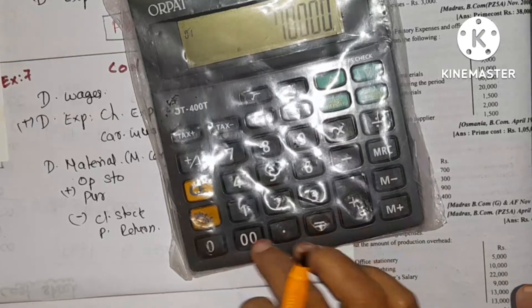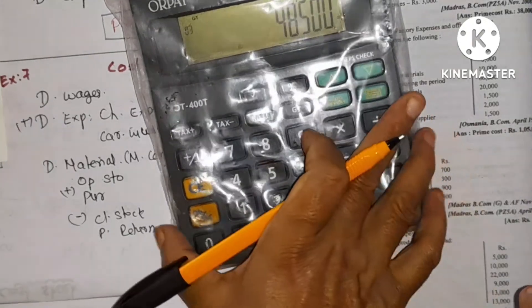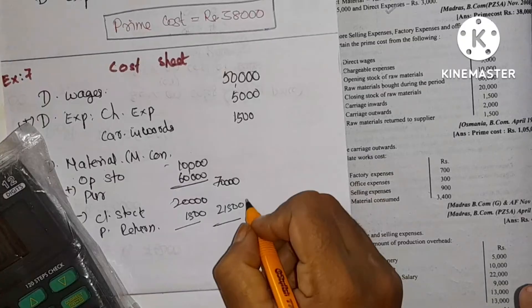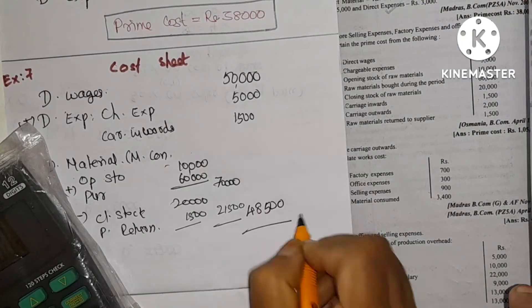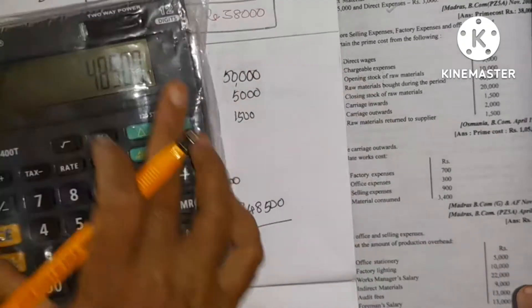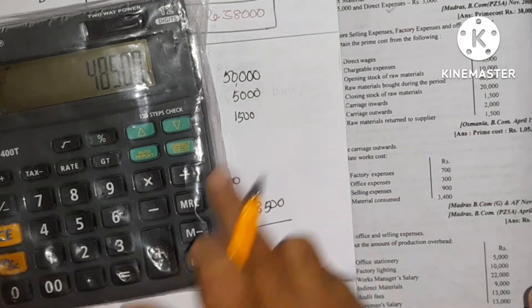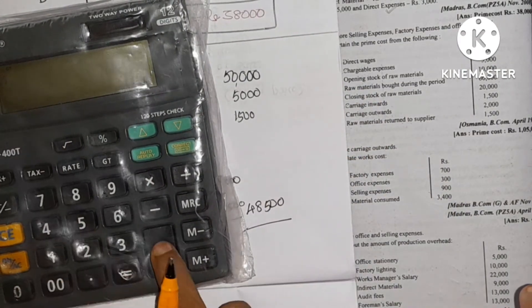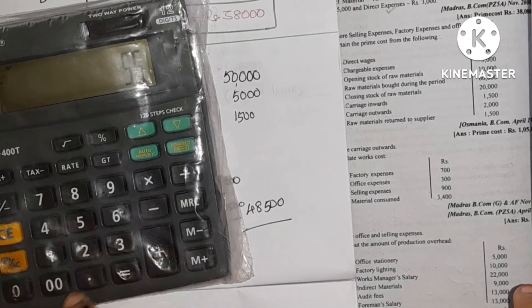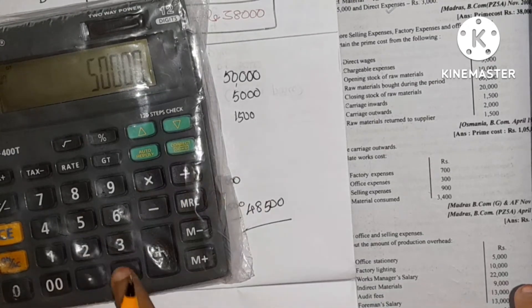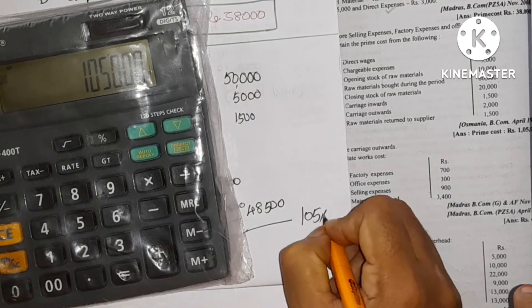70,000 minus 21,500 gives direct material of 48,500. Adding direct wages of 50,000 and carriage inward of 1,500 gives us the prime cost total.